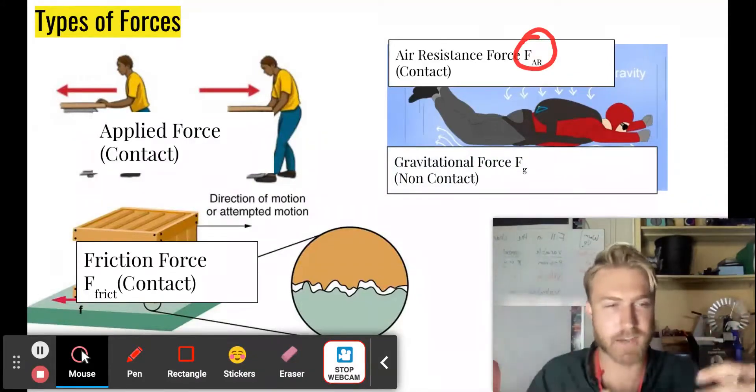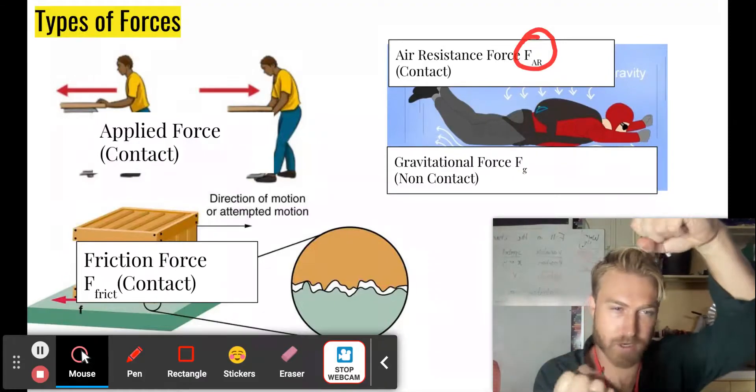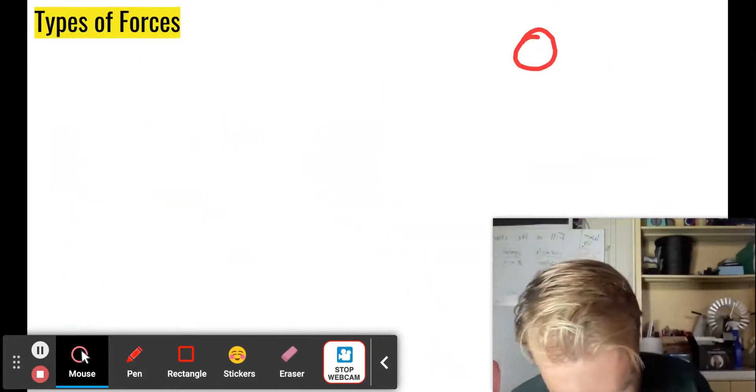But of course that skydiver is falling down because they feel the force due to gravity. It's a non-contact force. If you have mass, the earth has mass, you're going to attract one another. That's the force due to gravity.